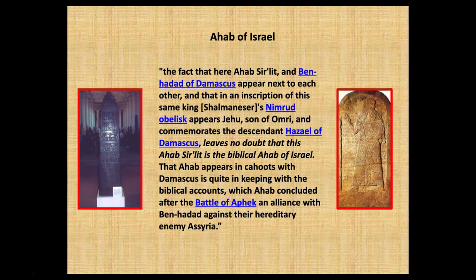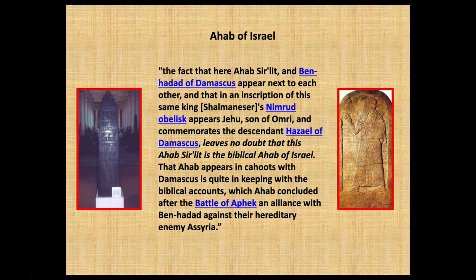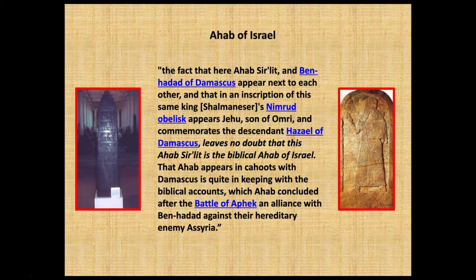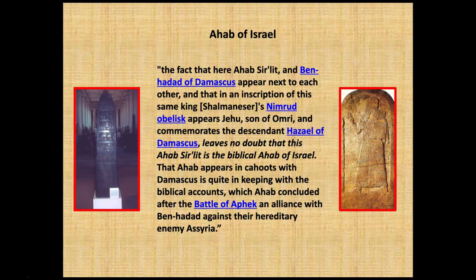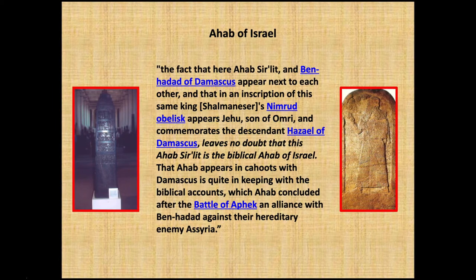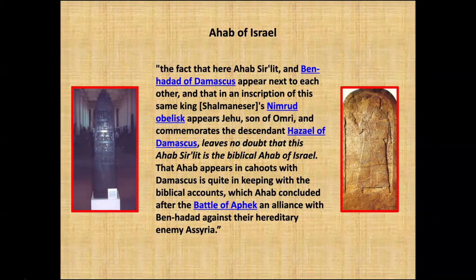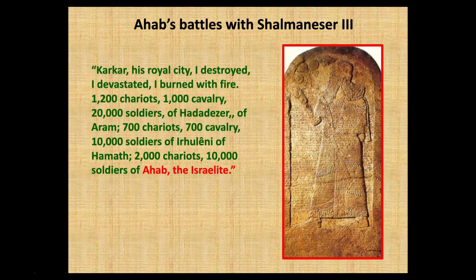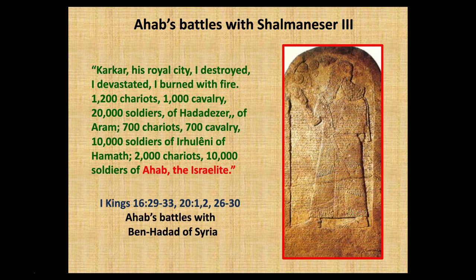The fact that here Ahab and Ben-Hadad of Damascus appear next to each other, and that in an inscription of this same king Shalmaneser's, at Nimrod of Balawat appears Jehu, son of Omri, and it commemorates the descent of Hazael of Damascus — it leaves no doubt that this Ahab is the biblical Ahab of Israel. Reading part of this inscription: 'Karkar, his royal city I destroyed, I devastated, I burned with fire. 1,200 chariots, 1,000 cavalry, 20,000 soldiers of Hadadezer of Aram; 700 chariots, 700 cavalry, 10,000 soldiers of Irhuleni of Hamath; and 2,000 chariots and 10,000 soldiers of Ahab the Israelite.' The Bible record of this is in 1 Kings chapter 16.